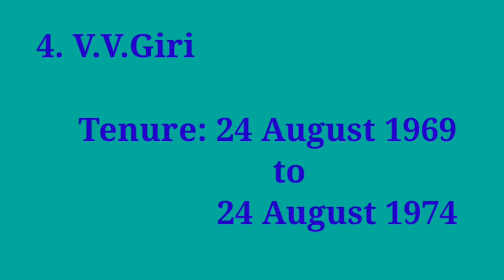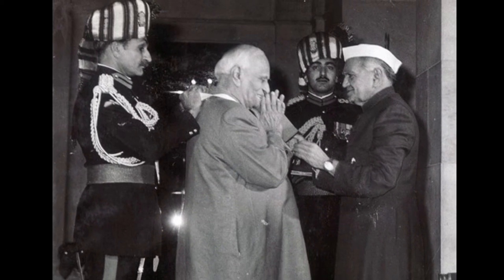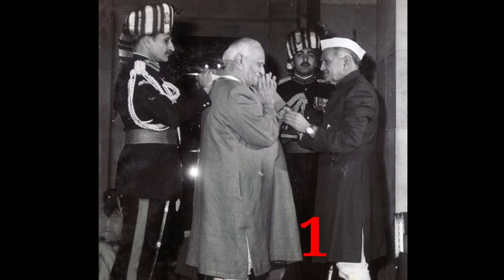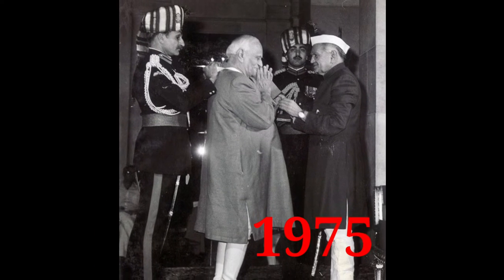Fourth, V.V. Giri, tenure: 24 August 1969 to 24 August 1974. V.V. Giri was the fourth President of India. His full name was Varahagiri Venkata Giri. He became the only person to be elected President as an Independent Candidate. He was awarded the Bharat Ratna in 1975.